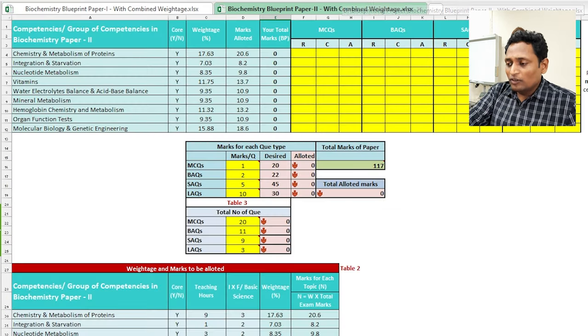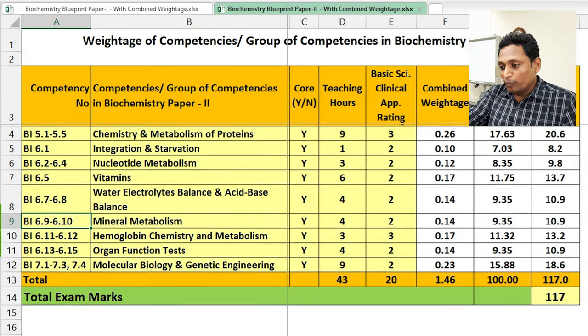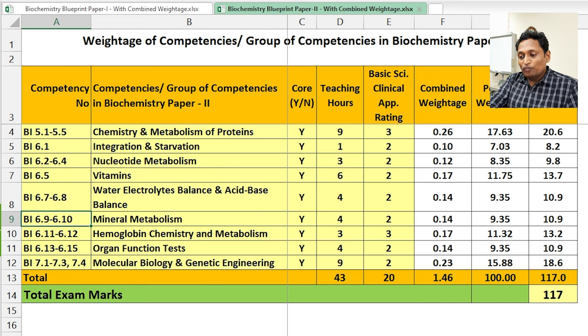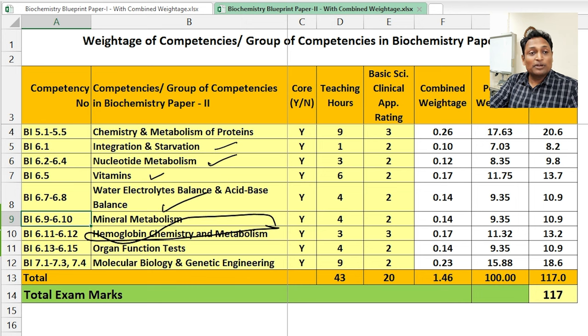Same thing here for the paper 2 as well for combined weightage. Go to the weightage table of paper 2, you will see that the groups of competencies is already made: protein group then integration and starvation, nucleotide metabolism, vitamins then water electrolyte balance and acid-base balance these are clubbed together. Mineral metabolism, hemoglobin chemistry and metabolism are clubbed together. So you will find that the major topics like metabolism have got maximum weightage which we want to set up proper question paper. That skewness is removed and you can stick to this weightage because that weightage has been validated and we are using this weightage since 2 years when the CBME came. It is proper weightage, you do not have to change the readings here and follow this weightage for your paper setting.